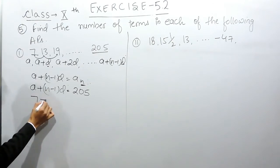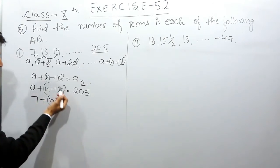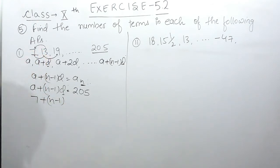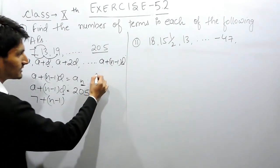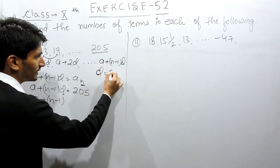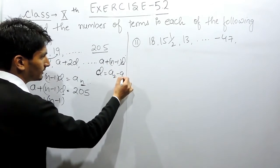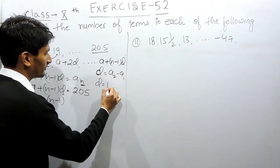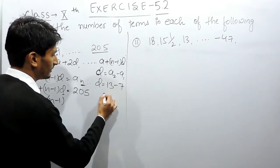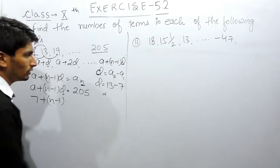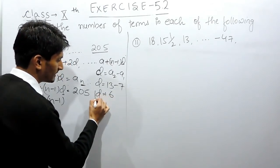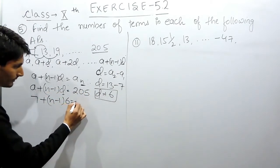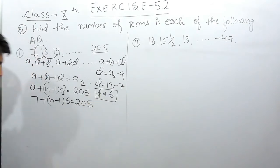The first term is 7. The number of terms you have to find out. The common difference can be found by subtracting any two consecutive terms. So we subtract the first term from the second term: 13 minus 7. So the common difference is 6. So 6 can be substituted here, and the last term is 205.